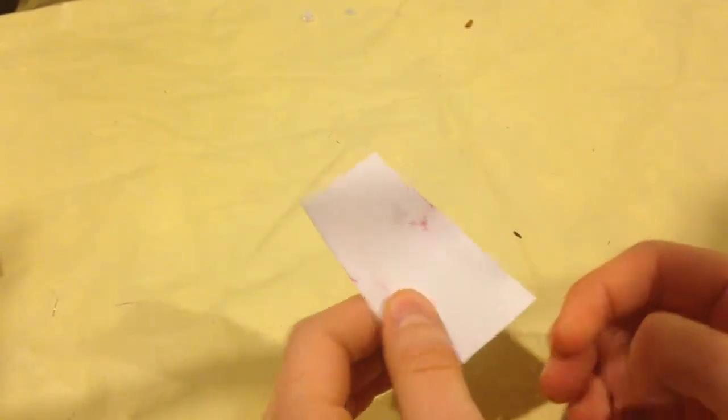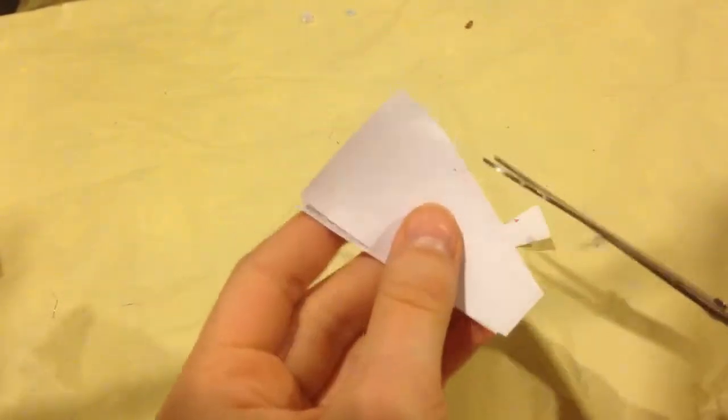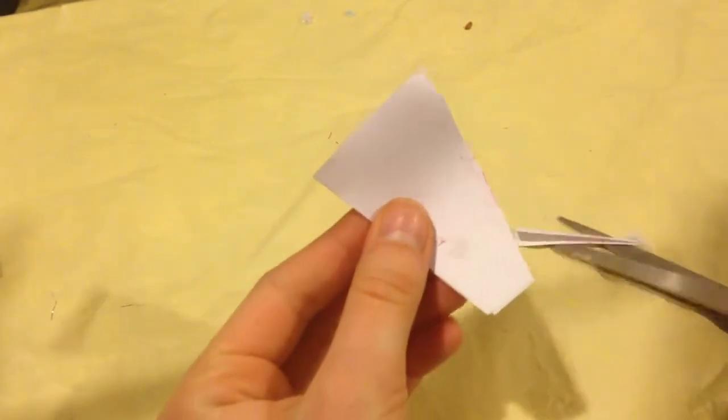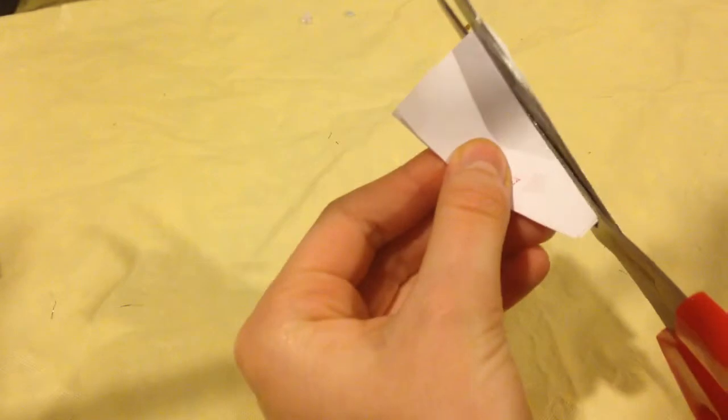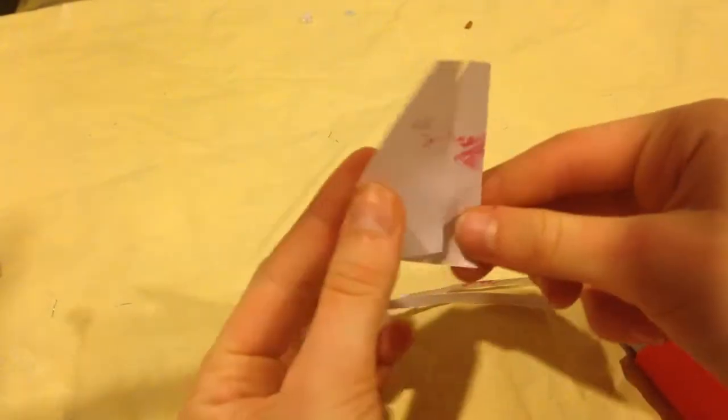So one side should be slanted. Then you're going to take your scissors and slant it down the other side. So then you're just going to do that until there's almost nothing left up top. Now they're two different pieces, as you can see.